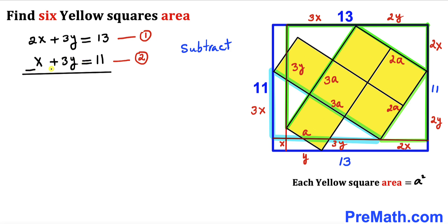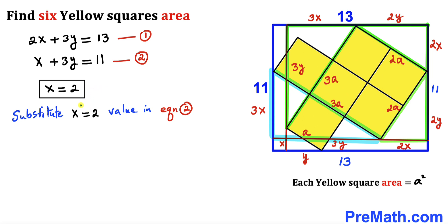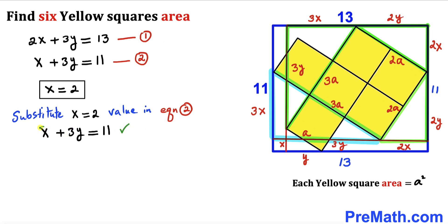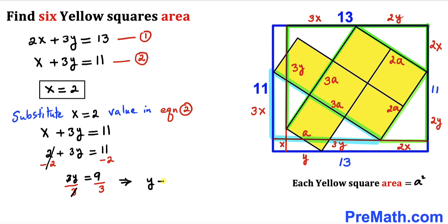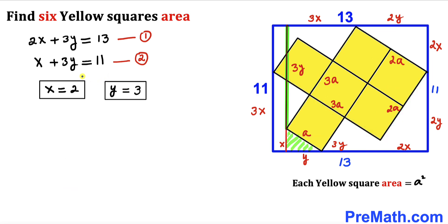We are going to subtract equation two from equation one. The +3y and -3y cancel, so 2x minus x gives us x = 13 − 11 = 2. Therefore our x value turns out to be 2. Now we substitute x = 2 into equation two: 2 + 3y = 11. Subtracting 2 from both sides gives 3y = 9. Dividing both sides by 3, our y value turns out to be 3 units. So x = 2 and y = 3.